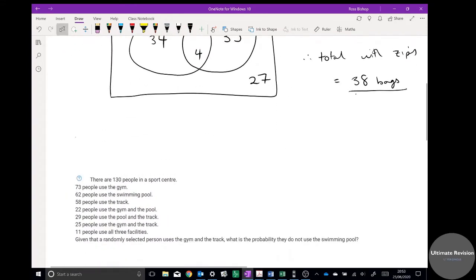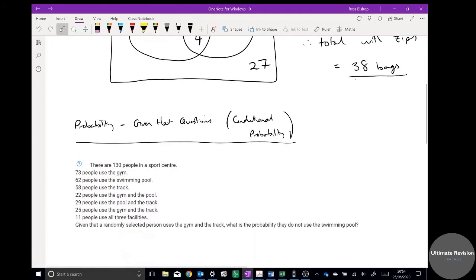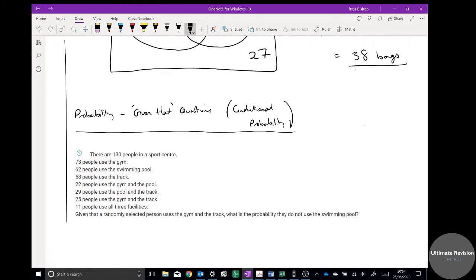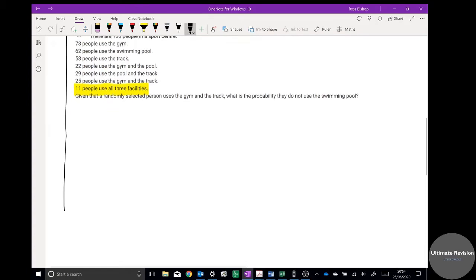Right, the second task now. This involves probability, and it's specifically given that questions. These are slightly harder, which is also known as conditional probability. So please put that as a subtitle: given that star questions, which is conditional probability. It's going to be a Venn diagram question again. This time we've got three activities, so it's going to be a Venn diagram with three separate circles.